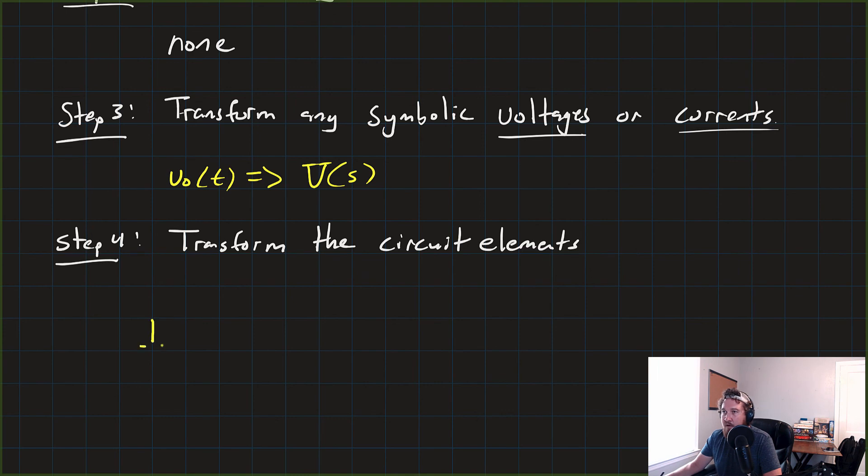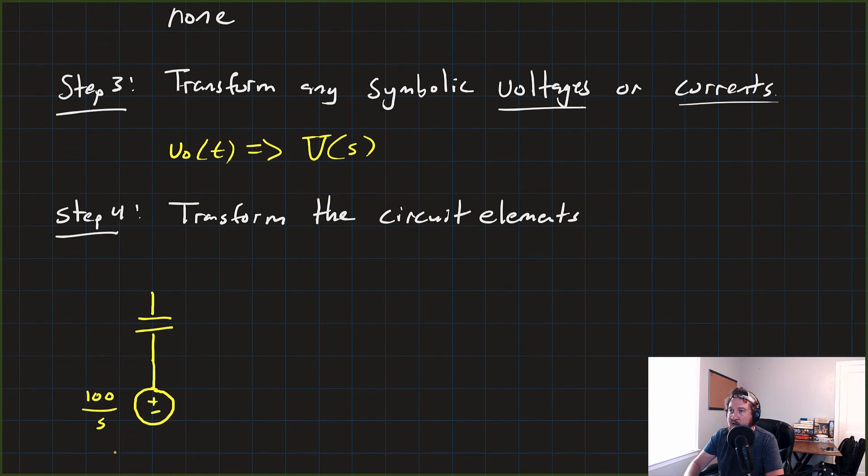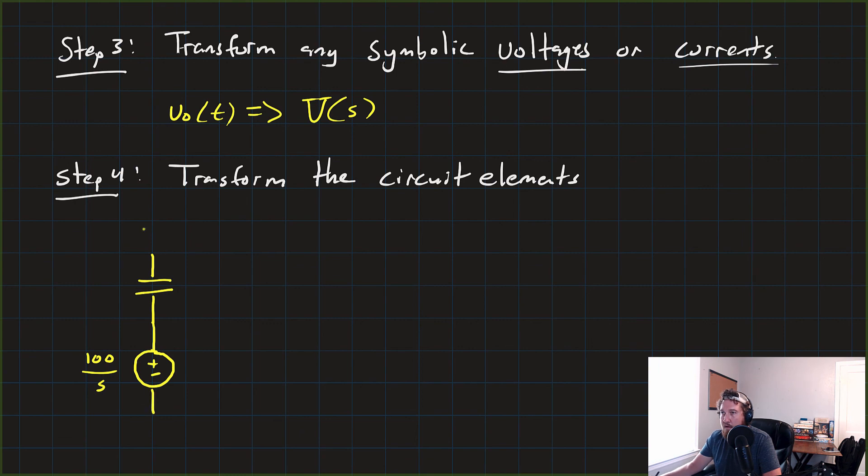We have the capacitor. And we'll talk about the values here in just a second, because we need to do some math first. Connected to this voltage source. Now, this one is 100 volts over S. And the resistors are resistors. They don't care about transforms or anything.